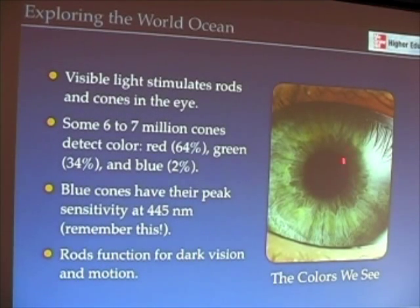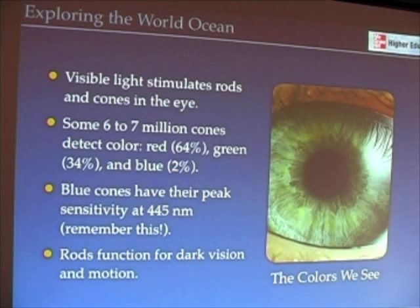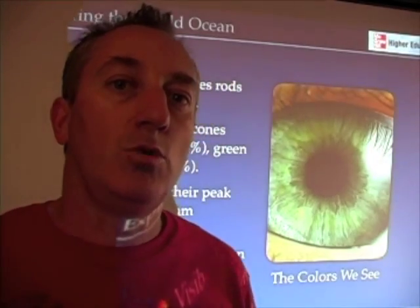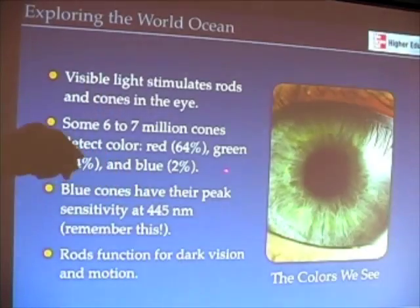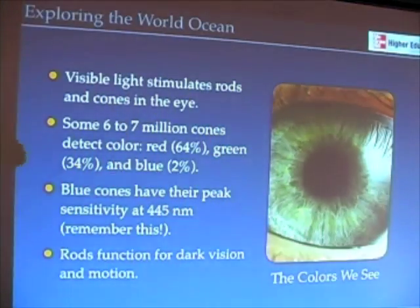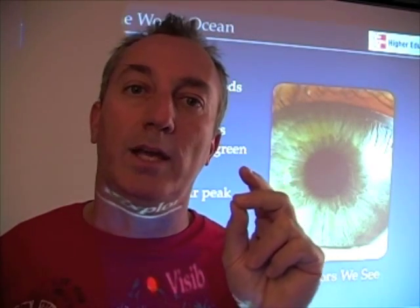Why can we see visible light? In your eye are cells called rods and cones. The cones are sensitive to specific colors. You have 67 million cones in your eyes — 64% are sensitive to red wavelengths of light, 34% are sensitive to green wavelengths of light, and just a small percent are sensitive to blue wavelengths of light.